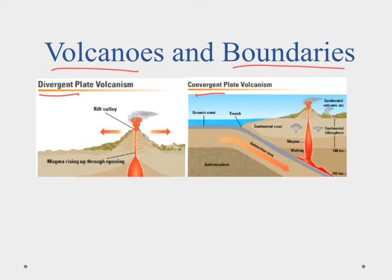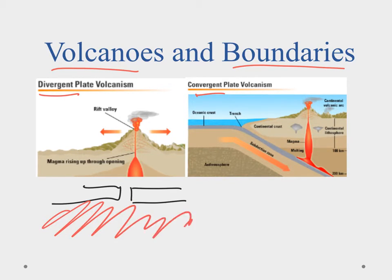In divergent boundaries, if you can remember, we have two plates that are moving apart. So as the crust moves apart, it's going to expose the mantle and the mantle will rush up through this opening and then we'll get these volcanoes there. So at divergent plates, remember we have these plates that are moving apart. They create this rift and in this rift is where we have magma come up and we have volcanism happening there.